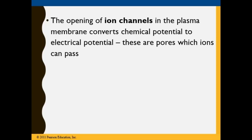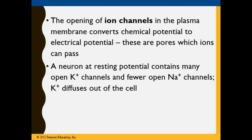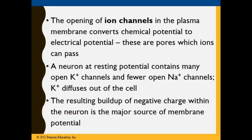Electrical impulses are responsible for delivering messages from one neuron to another. A resting neuron contains many open potassium channels and fewer open sodium channels. Potassium diffuses outside the cell, and the resulting build-up of negative charge within the neuron is the major source of membrane potential. There is a substantial pressure on sodium ions to enter the resting neuron.